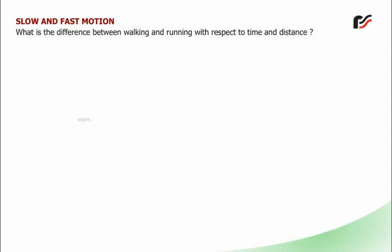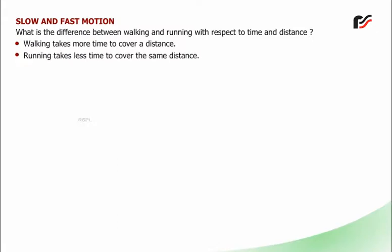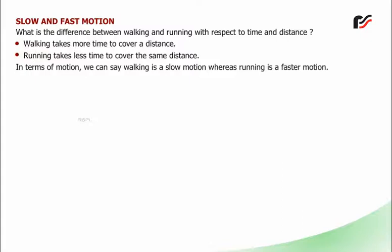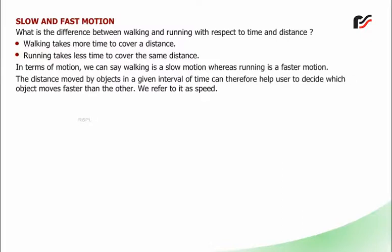Slow and fast motion: What is the difference between walking and running with respect to time and distance? Walking takes more time to cover a distance, whereas running takes less time to cover the same distance. In terms of motion, walking is a slow motion whereas running is a faster motion. The distance moved by objects in a given interval of time can help us decide which object moves faster. We refer to it as speed.